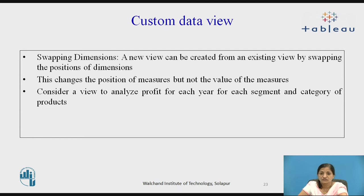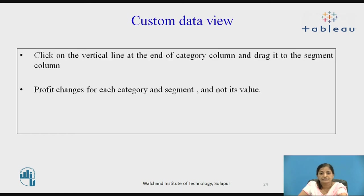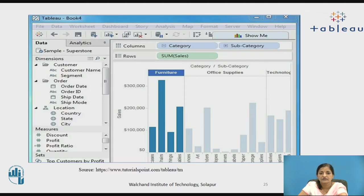Now let us see what swapping dimensions means. A new view can be created from an existing view by swapping the positions of dimensions. Swapping changes the position of measures but not the values of the measures. Consider a view to analyze profit for each year, for each segment and category of products. Click on the vertical line at the end of the category column and drag it to the segment column. You will find that profit changes for each category and segment but not its value. The screenshot shows analysis for every category and subcategory, with column-wise sales, and after dragging the category-subcategory column to the segment level, it shows all the analysis for this.